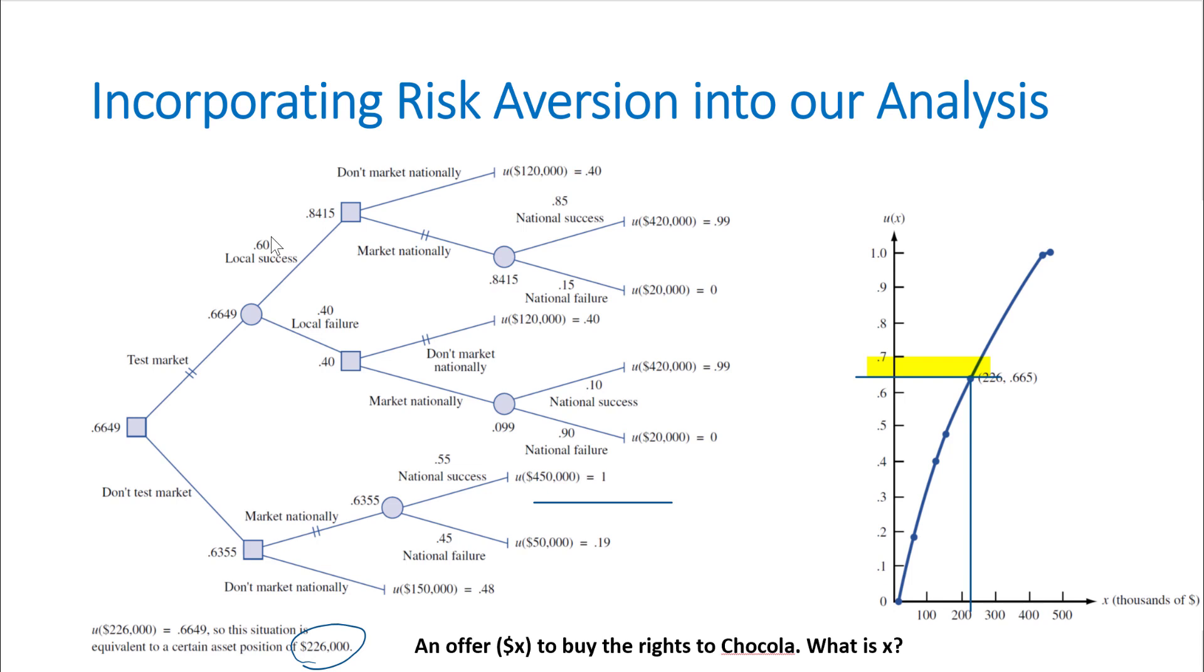These are all potentials—increasing your asset position from $150,000 to $420,000—and there are some risks. So they are indifferent between receiving $226,000 and doing the local and then national marketing.